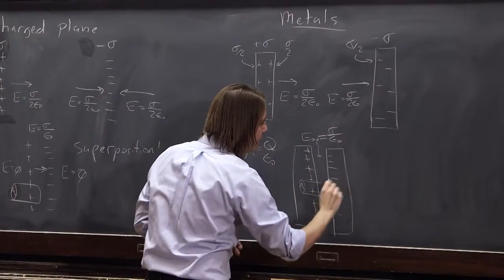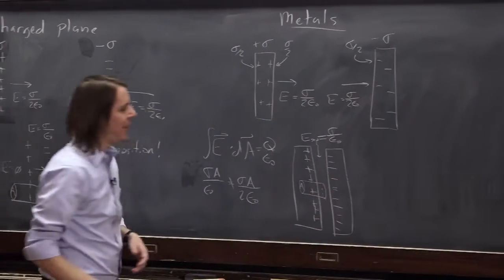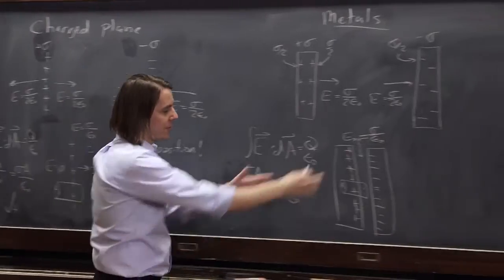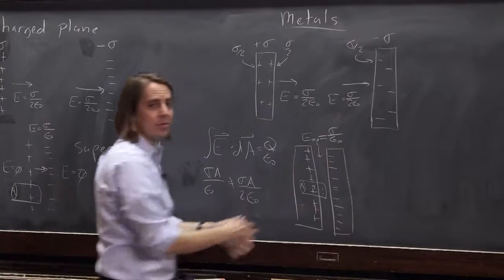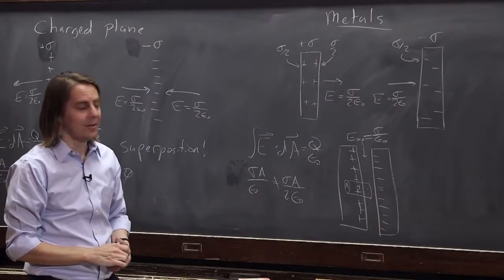And all these negative charges run over here. And the back has essentially no charge on it, when you have two plates like that. So the charge configuration changes when you make the capacitor.